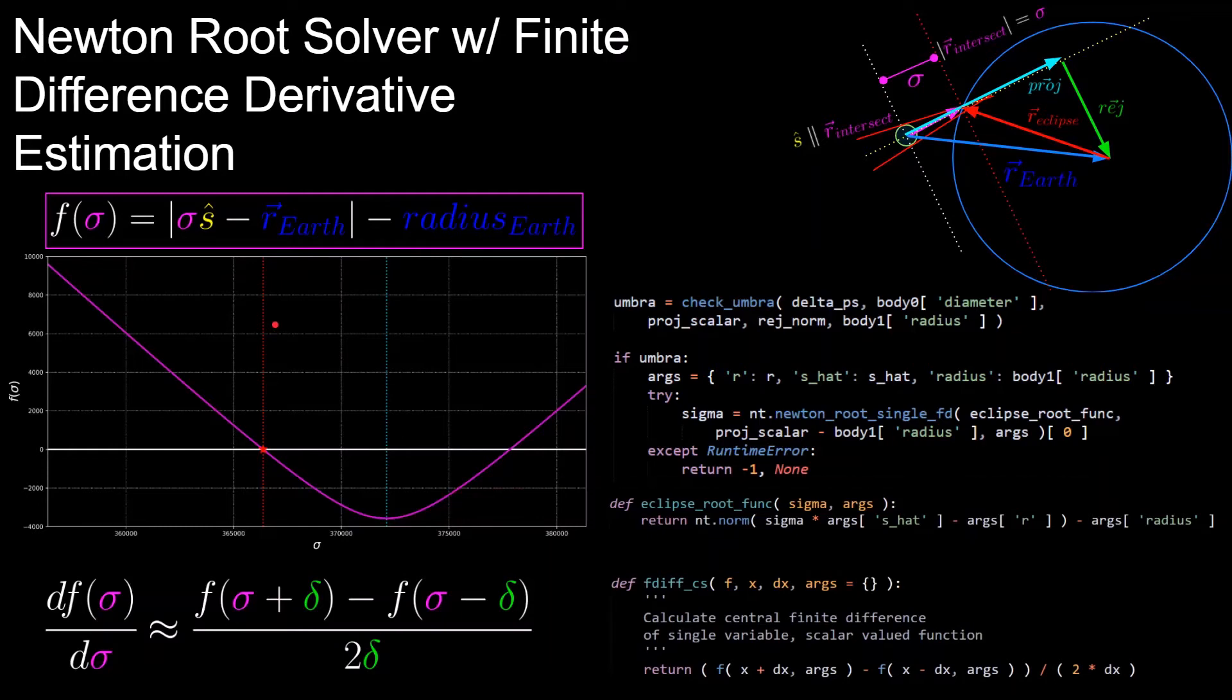So what root solvers do, they take an initial guess of the answer, which is probably not the solution, and then use a derivative of the function at that point to guide them towards the root. So if we imagine we give an initial guess of 360,000 for sigma, and follow the tangent line, which is the derivative, all the way until we hit y equals zero, we actually get very close to the true solution.